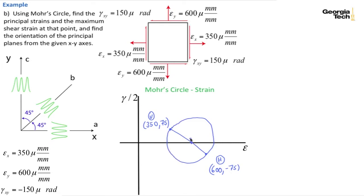First thing I want to do is find the center. That's going to be the average strain, so we've got 600 plus 375 divided by 2 for our average normal strain, which ends up being 475. So this is 475 and 0.